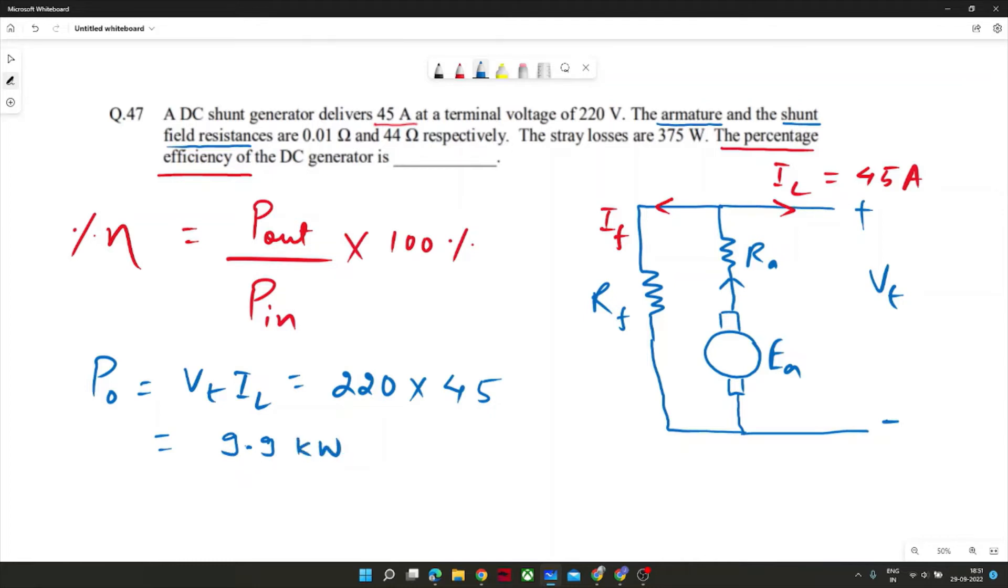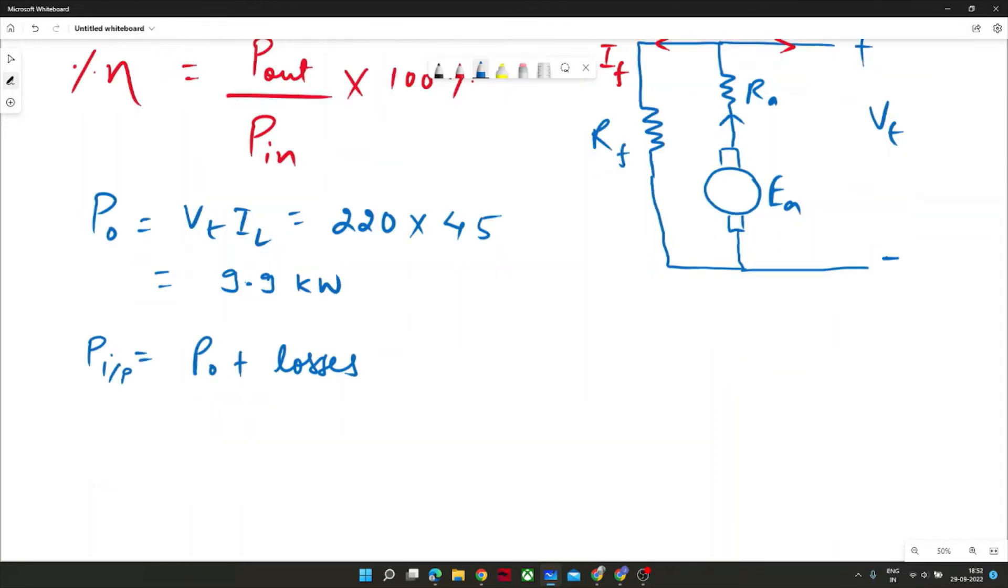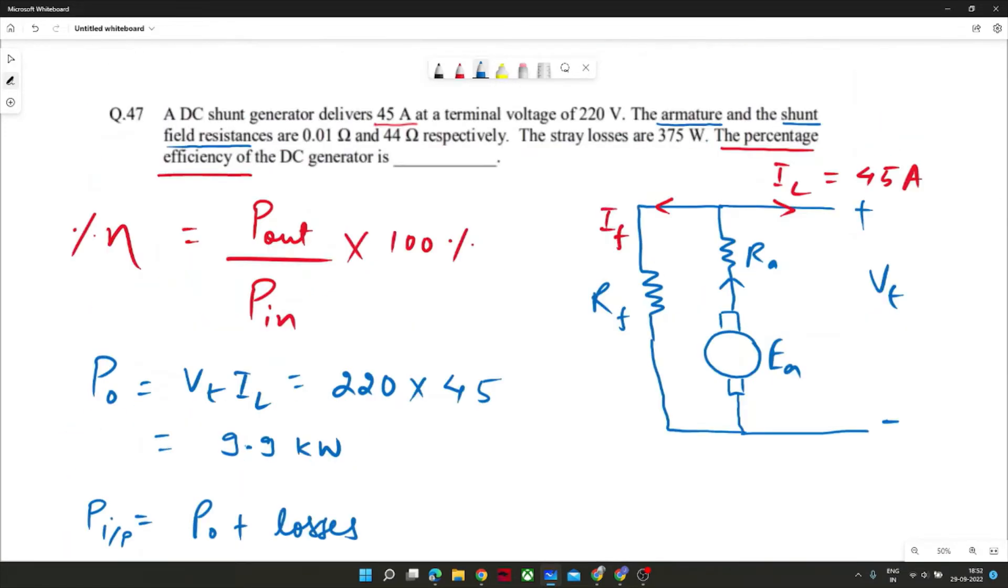Okay, so this is output, output. It was straightforward. Now we want to move towards input. Output and it is generator, so input would be output plus losses. And total losses would be copper losses. Which losses will present in the circuit? One loss is given, stray loss, that is 375 watt. Any other loss? Copper loss would be there in which component?